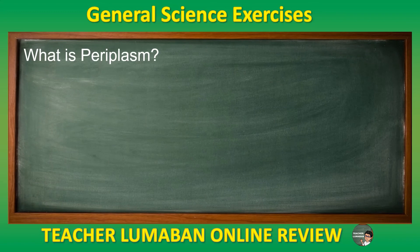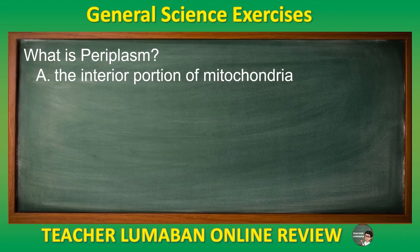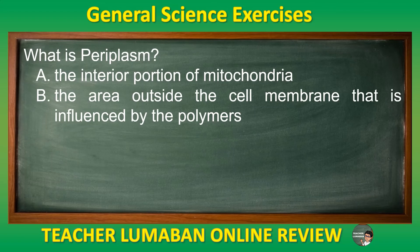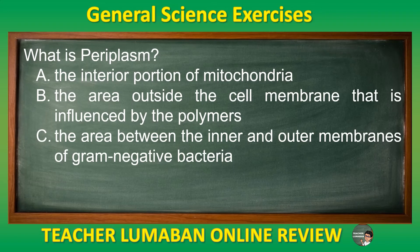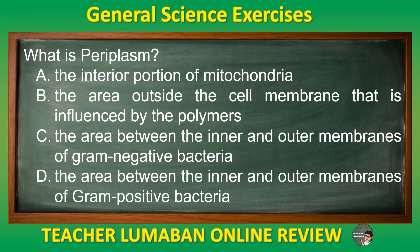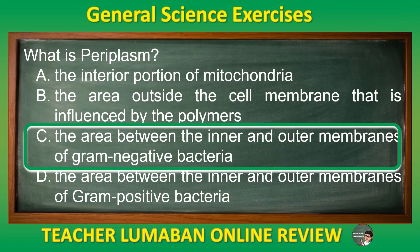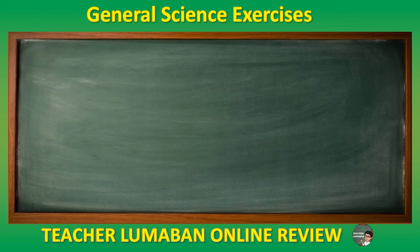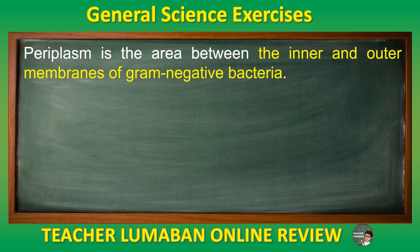What is periplasm? Letter A: The interior portion of mitochondria. Letter B: The area outside the cell membrane influenced by polymers. Letter C: The area between the inner and outer membranes of gram-negative bacteria. Letter D: The area between the inner and outer membranes of gram-positive bacteria. The correct answer is Letter C. Periplasm is the area between the inner and outer membranes of gram-negative bacteria.